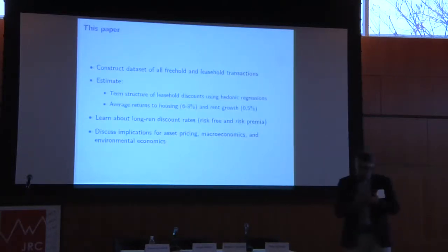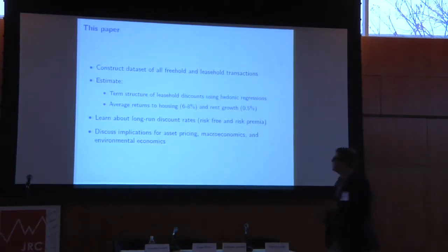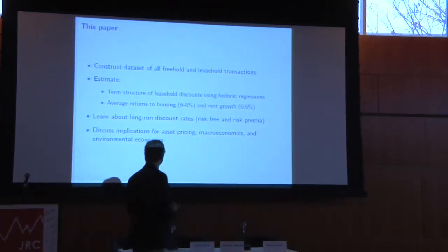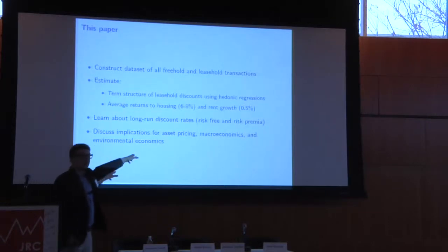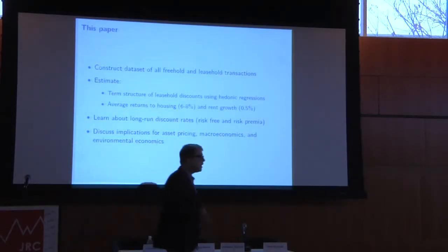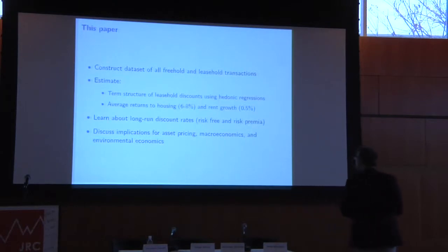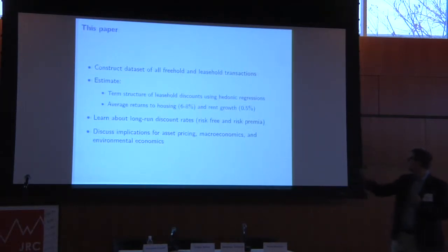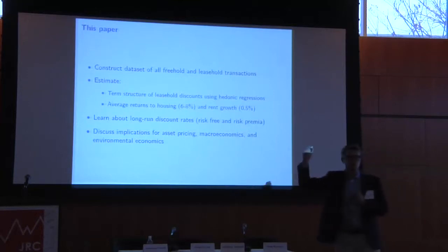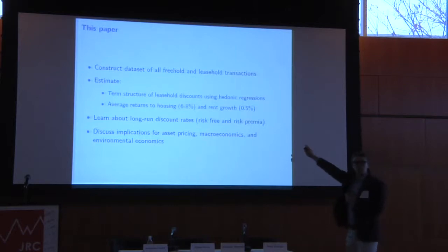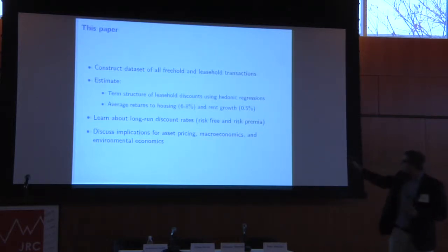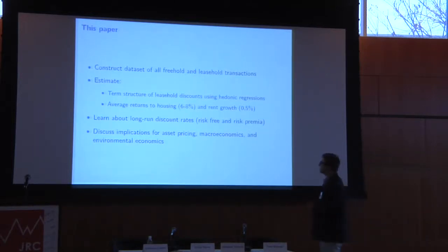What we do in the paper: we construct a dataset of all freehold and leasehold transactions in the UK and Singapore, and we use that dataset to estimate the term structure of leasehold discounts using hedonic regression techniques. We also estimate average returns to housing and rent growth — those 6% and 0.5% figures — to make sense of the results. We then use them to learn about the long-run discount rate: how do people discount cash flows 200 or 300 years into the future? We also try to split out the risk-free rate component from the risk premium component.